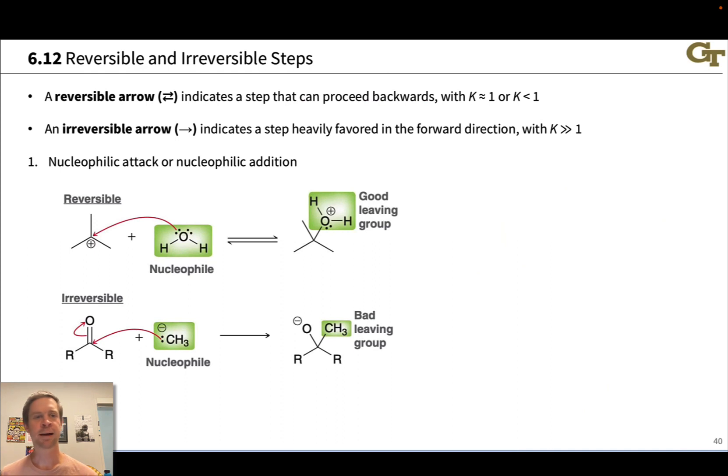In an elementary step, a reversible arrow between the reactants and products indicates a step that can proceed backwards, whose reverse reaction has a non-negligible rate. From a chemical equilibrium point of view, this corresponds to a step whose equilibrium constant is close to one or less than one, where we don't have complete generation of the products of that step. They're only generated to a partial extent or there's close to a 50-50 mixture of the reactants and products at equilibrium.